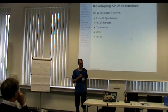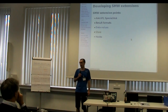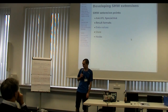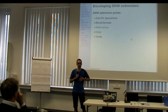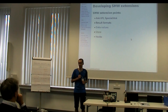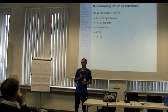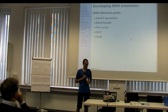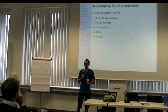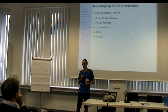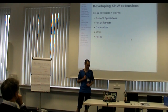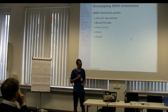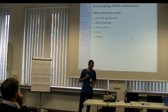Another extension point are the data values. SMW has different types of data — you have strings, numbers, booleans, geographic coordinates, and all these kinds of things. And you can extend this. Geographic coordinates is actually the only thing that's done on top of SMW with extending in this fashion, in Semantic Maps.